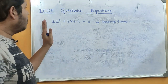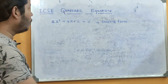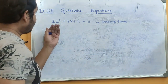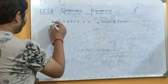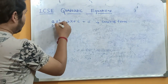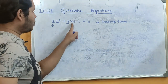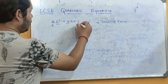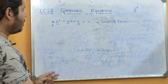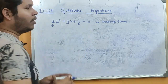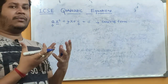To understand a quadratic equation, you first need to know the general form. It is: ax² + bx + c = 0. Here, 'a' is the coefficient of the square term, 'b' is the coefficient of the linear term, and 'c' is the constant term, and it equals 0. This is the general form of a quadratic equation.